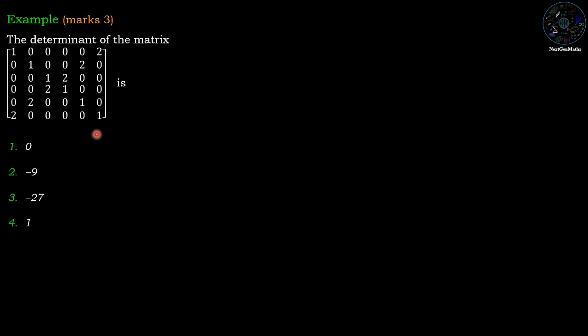To evaluate the determinant we have two methods. First method is cofactor method and second one is row operation. For the higher order matrices, row operation method is more effective than the cofactor method, and the given matrix is of order 6 by 6, therefore row operation method is more effective.